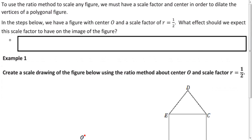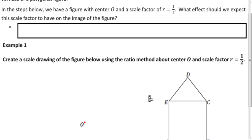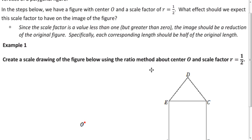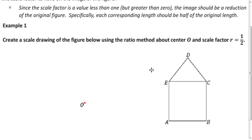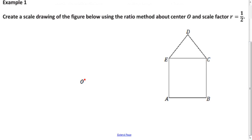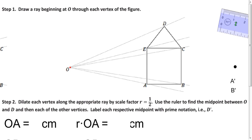So how do we actually apply the ratio method to dilate a figure? We have a center here, a little house figure, with center O and scale factor one half. The image should be smaller because it's a reduction — the scale factor is between 0 and 1. The ratio method involves measuring distances. The first thing you do is draw a ray from the center through each point, applying the dilation to all the vertices.